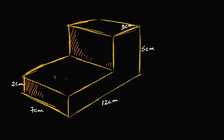Let's see if we can figure out the volume of this figure over here. They've given us some of the dimensions: this side is two centimeters, this is seven centimeters, this is 12 centimeters, this is five centimeters, and this is three centimeters. Pause this video and see if you can figure it out.